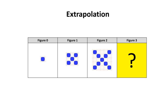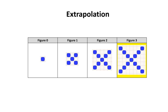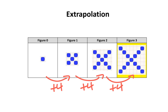I want you to examine the figures below and extrapolate the number of blocks in figure 3. This is extrapolation, since this is a prediction beyond what we already know. If you had extrapolated figure 3 to contain 13 blocks, you would have been correct. Some of you may have used a rate of change, which was an increase of 4 blocks for every 1 figure.